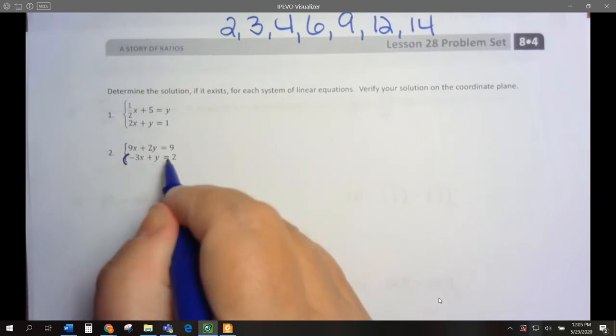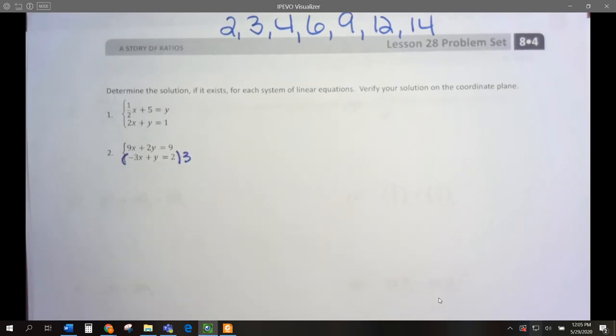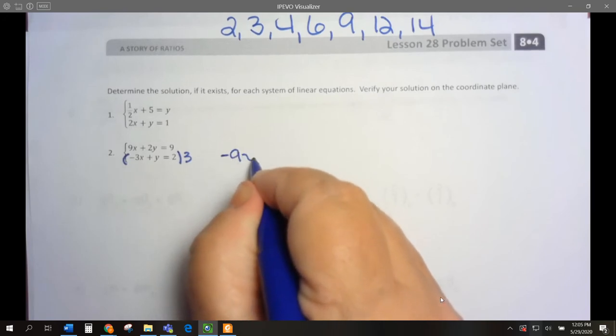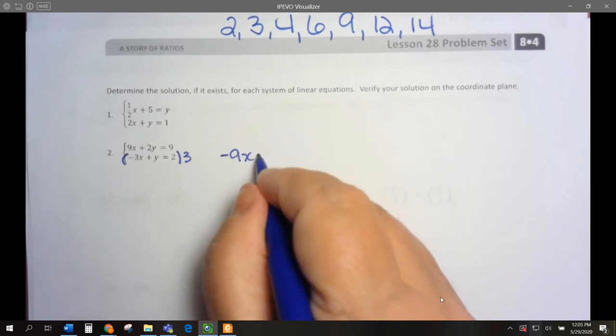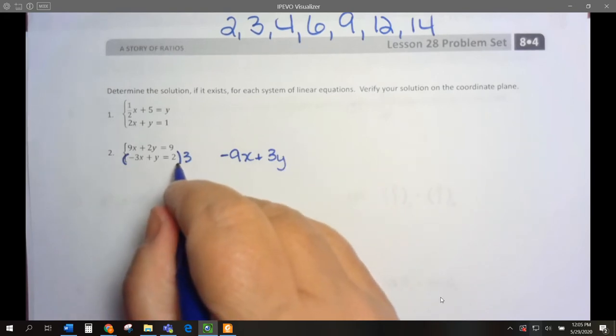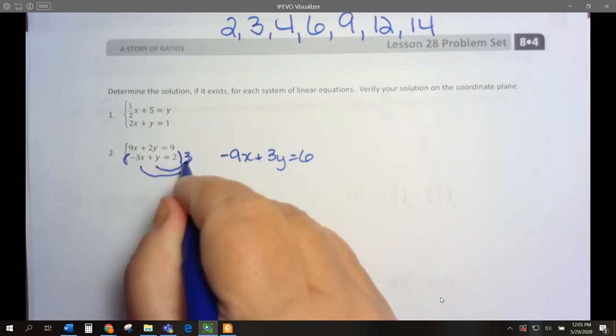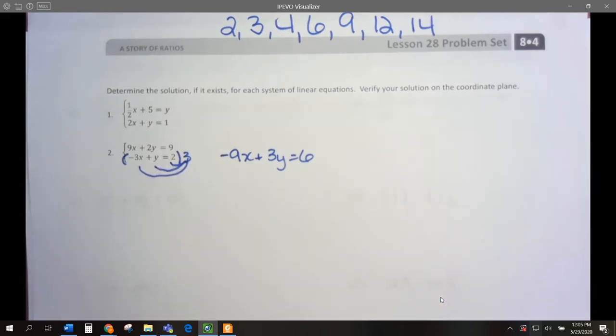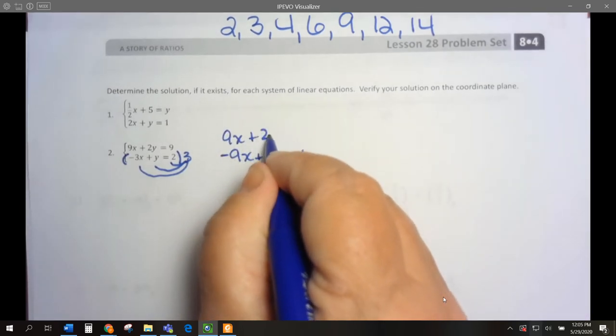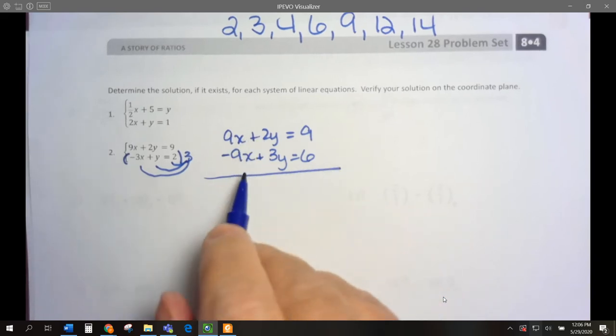So let's take this whole equation and multiply it by 3. I would then get negative 9x plus 3y equals 6. Remember, I basically used distribution. On top, the top one is 9x plus 2y equals 9. So I can add these together.